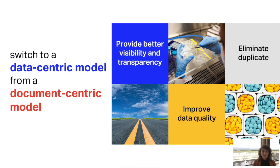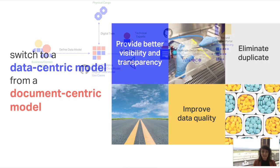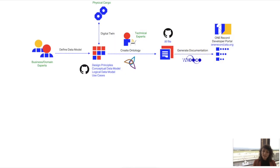As a pain point of the current air cargo industry is the document-centric model. We want to switch to a data-centric model, which would provide better visibility, transparency, improved data quality, and elimination of duplicates. To do this technically, we organized a group of business and domain experts from IATA and the industry — shippers, airlines, customs, etc. Together they define what we call the data model, which is a digital twin of the existing physical cargo. All data model specifications are put together in documents available on GitHub — open source and free to access. These include design principles, the conceptual and logical data model, and existing use cases.